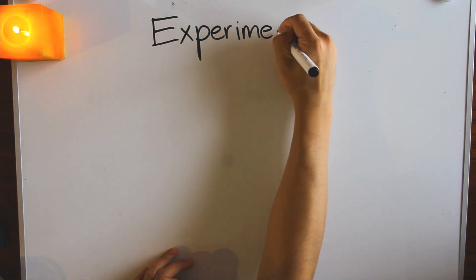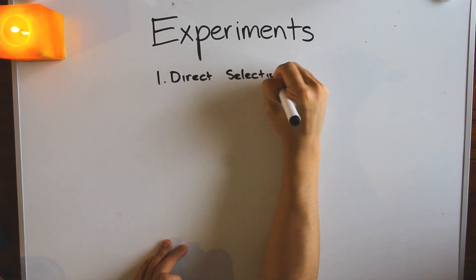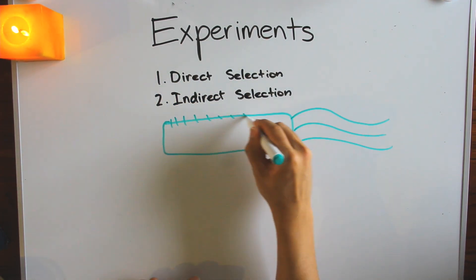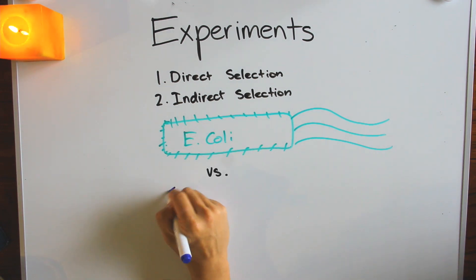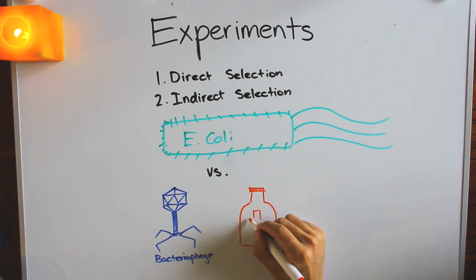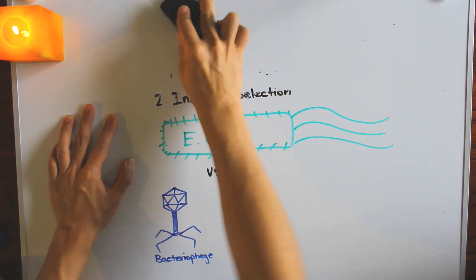But how did the Lederbergs use this technique to find out how mutations happened? Well, instead of fire resistance, they looked at antibiotic and phage resistance in E. coli through two experiments: a direct selection and an indirect selection experiment. Antibiotics and bacteriophages are both very good at killing E. coli, so resistance against them is basically like a bacterial superpower.